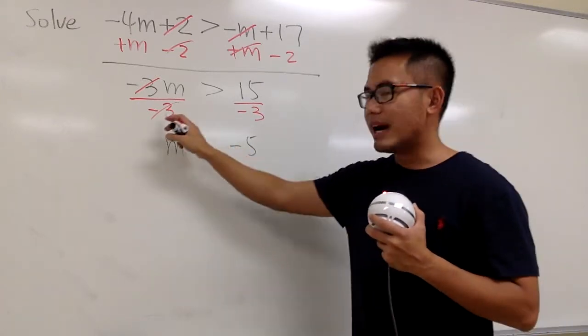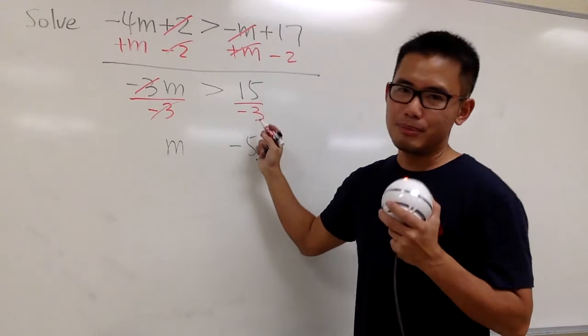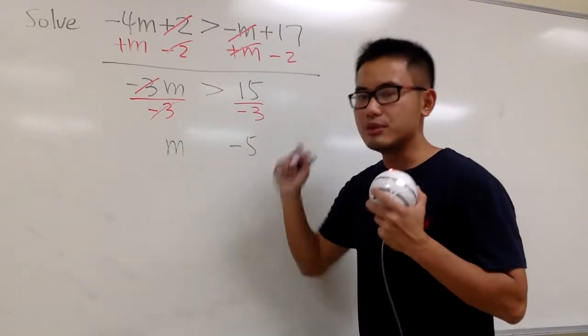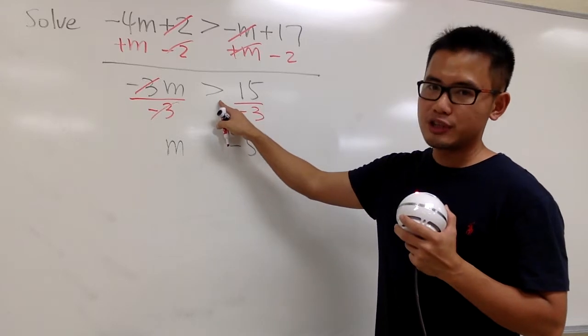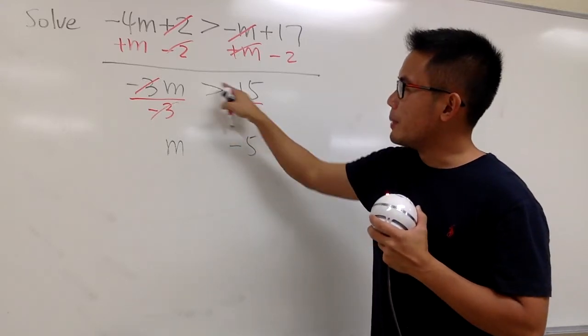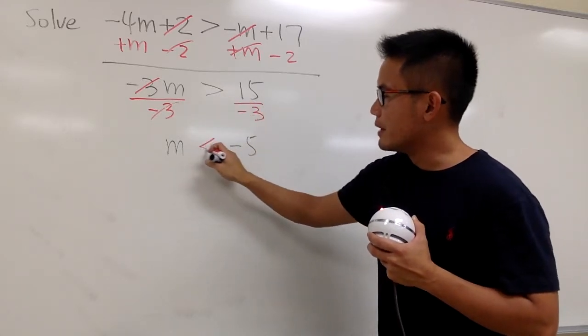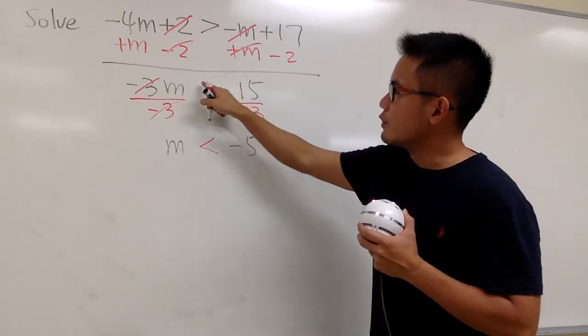But we divide both sides by a negative number. This is a negative 3. So be sure you take this inequality and you switch direction. Instead of opening this way, it becomes opening this way. Instead of greater than, now it becomes less than.